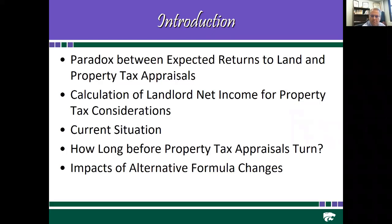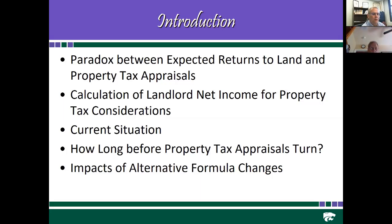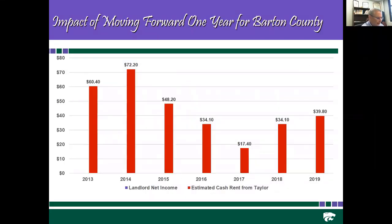There was a proposal that was filed. It didn't really go anywhere in the last session, but we've done some preliminary analysis to see how that may end up changing the formula. The paradox between the cash rents, the returns from farming, and the landlord net income are there — especially with the recent decline in net farm income with declining profitability from the cropping sector.